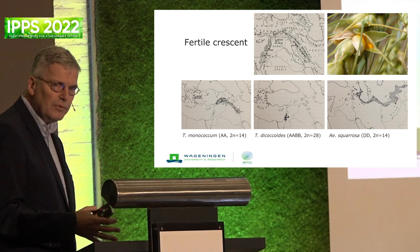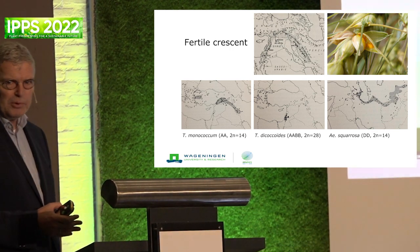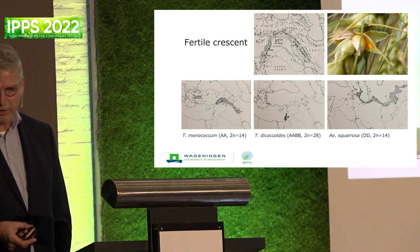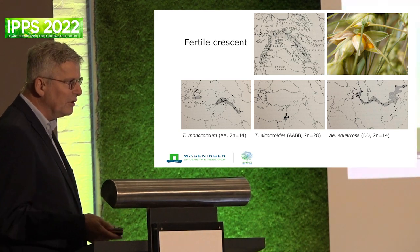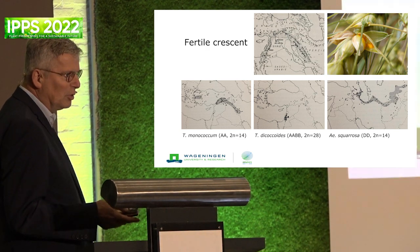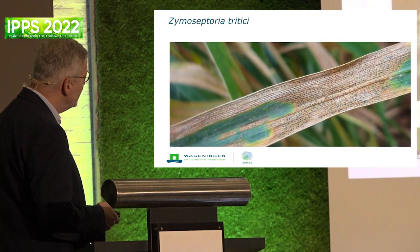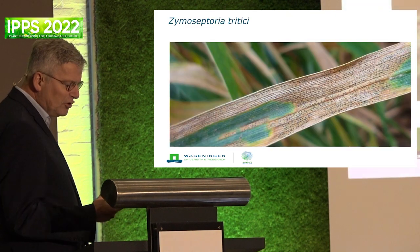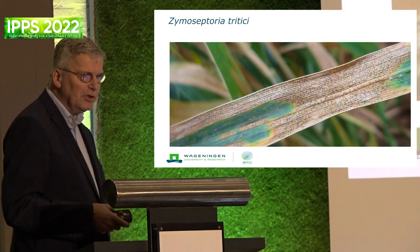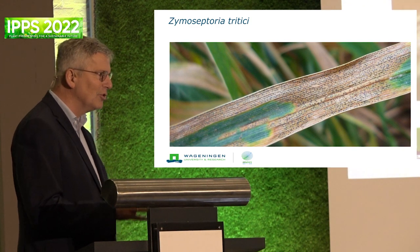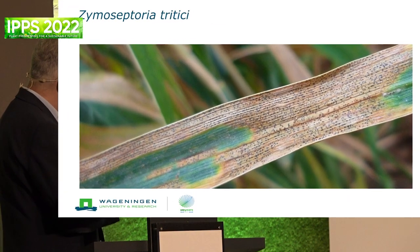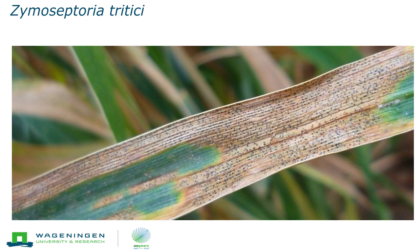Stripe rust research involved comparative phenotyping of seedlings and adult plants - adult plants either in the field or in the greenhouse, but mostly in the field. Quite soon I switched to Zymoseptoria tritici - this is now the latest name and it is not going to change anymore. This disease is called Septoria tritici leaf blotch. In the past, we also called the fungus Mycosphaerella graminicola, but this is now all Zymoseptoria tritici.